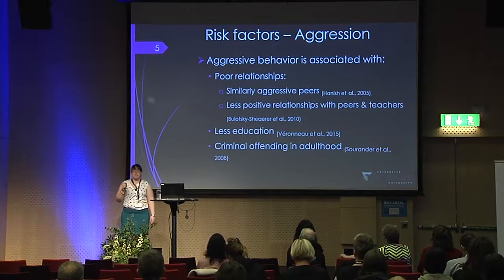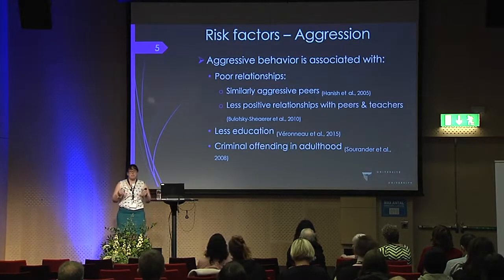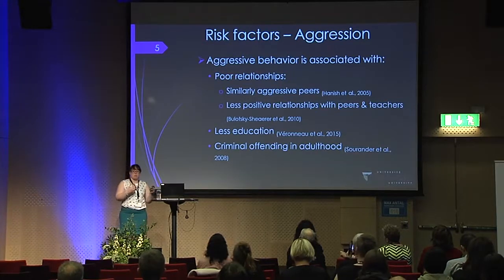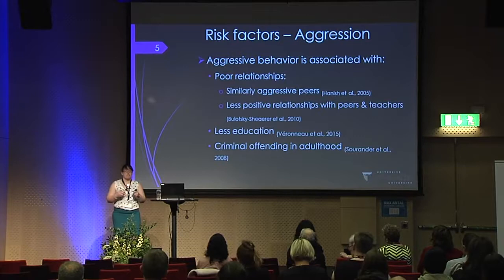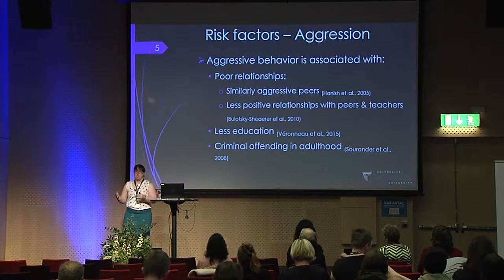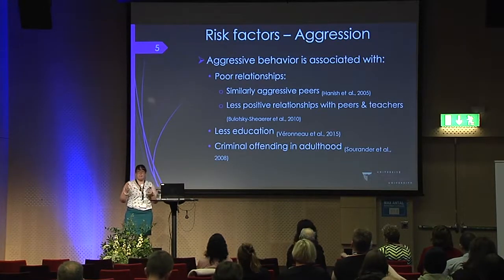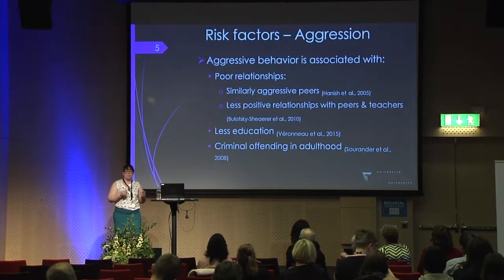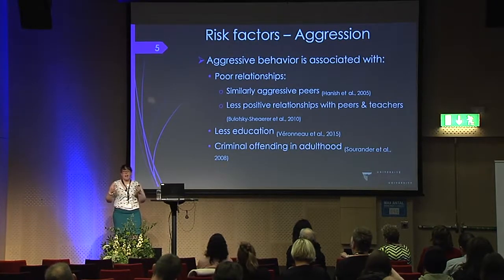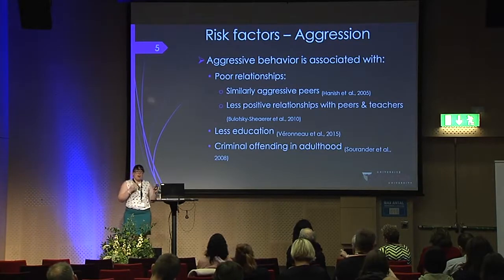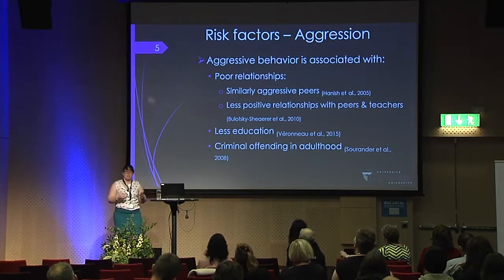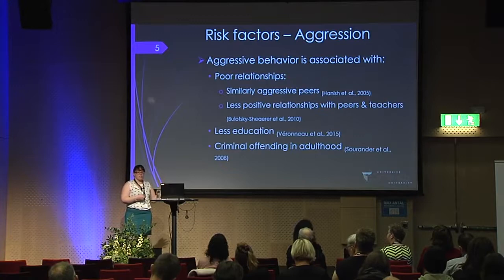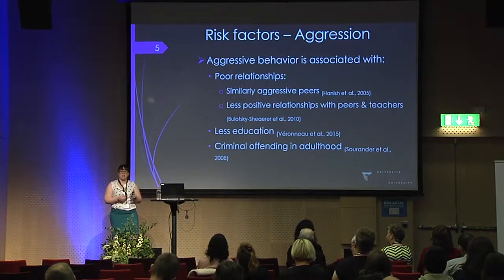Aggressive behavior towards peers as a risk factor has been associated with poor relationships, including with peers and teachers. This manifests in two ways: being an aggressive child means you're more likely to associate with similarly aggressive children, which exacerbates the effect. It also means you're less likely to have positive relationships with both peers and teachers. Aggression in childhood has also been associated with less education and fewer years of schooling, and there's a well-established relationship that aggression in childhood predicts later criminal offending in adulthood, specifically violent crime.